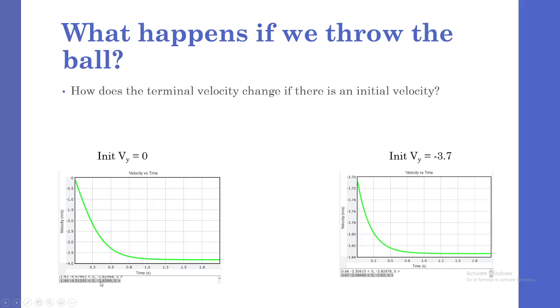We see that their terminal velocity is equal to the same, so the terminal velocity will not change. However, the time it takes to reach the terminal velocity change dramatically, with it reaching terminal velocity much faster when the initial velocity was set to negative 3.7.